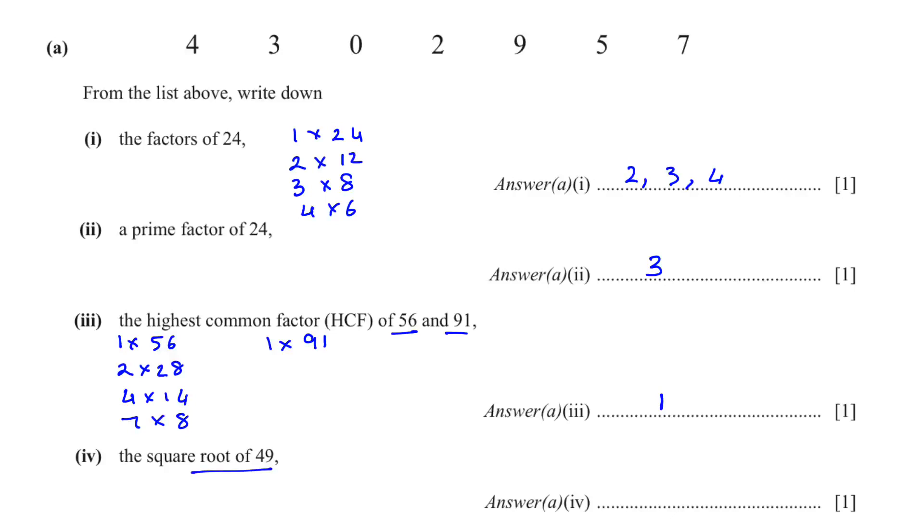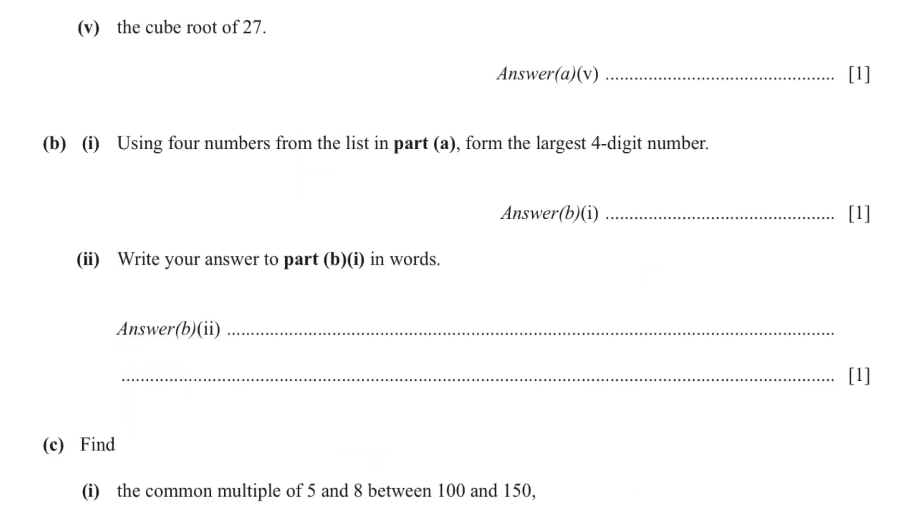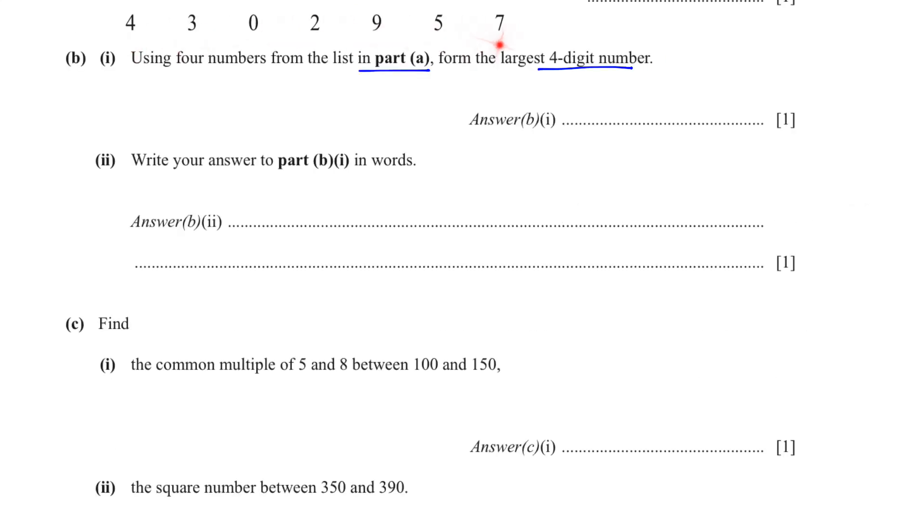The next question, the square root of 49. Square root of 49 is 7. And then we have to find the cube root of 27. You write in the calculator. You should know that 3 times 3 times 3 is 27. Using 4 numbers from the list in part A, we have to find the largest 4 digit number. Whenever they say the largest, you start from the largest number towards the smallest number. So it's going to be 9754. We have to write the answer in words.